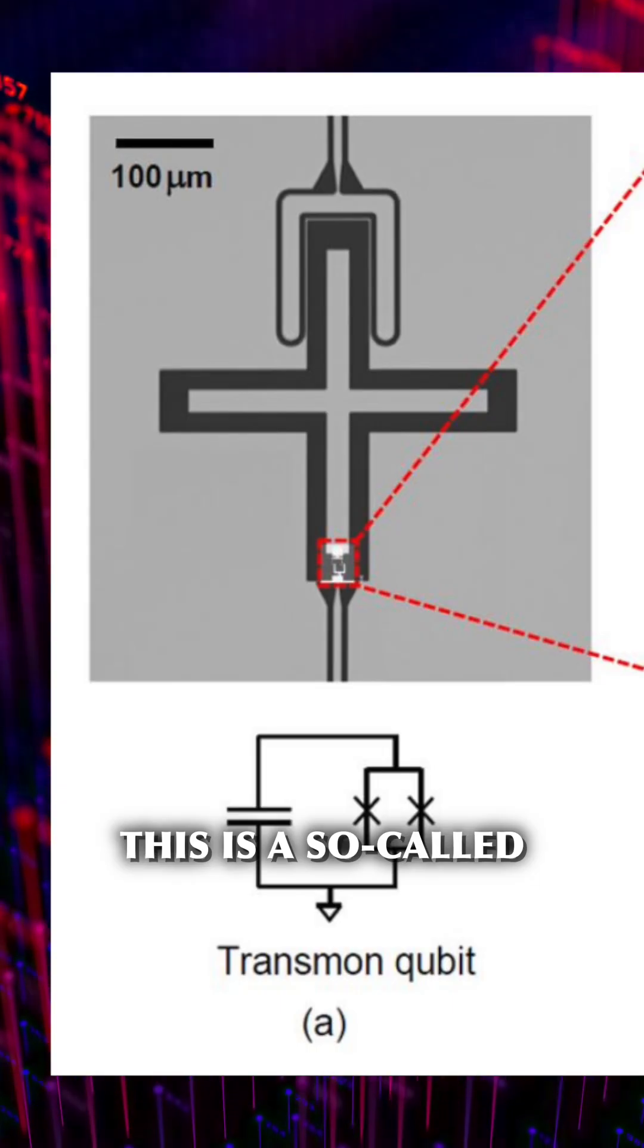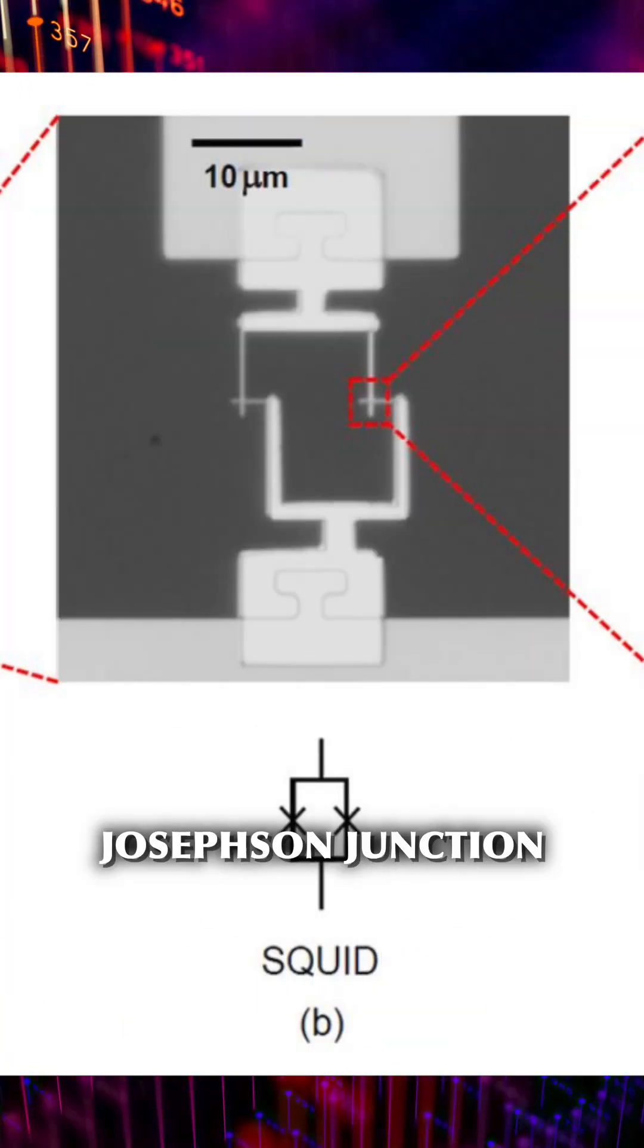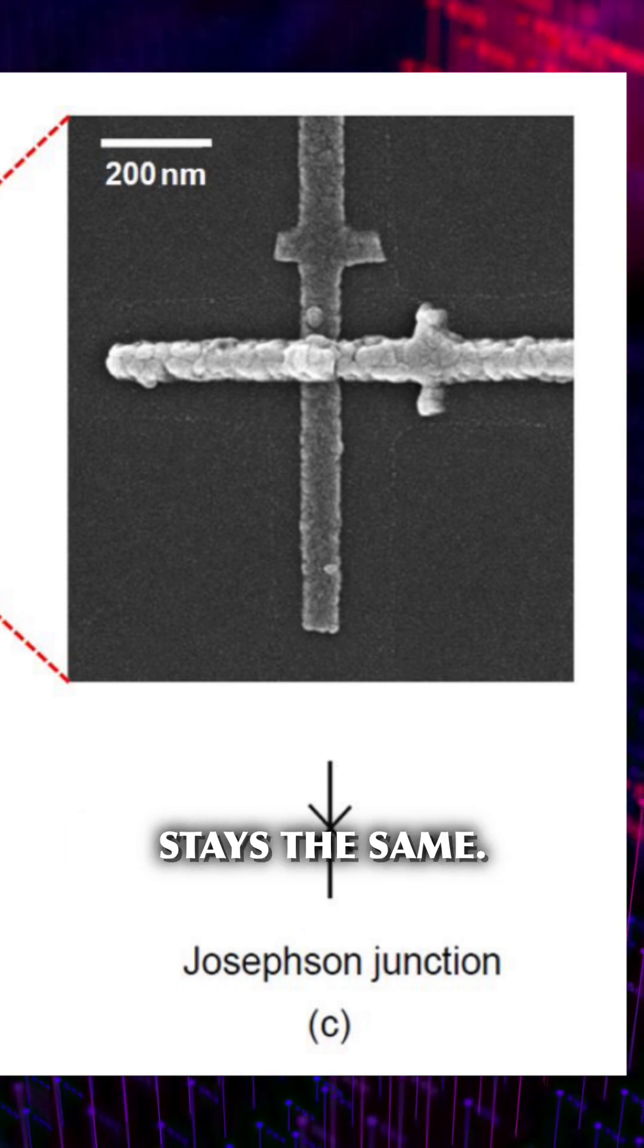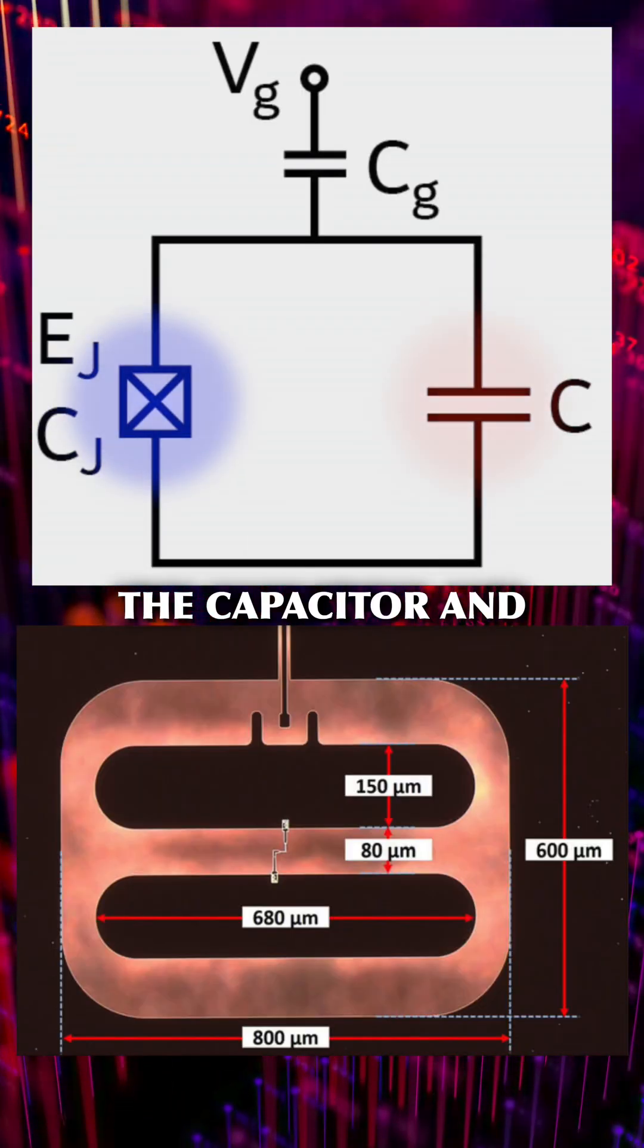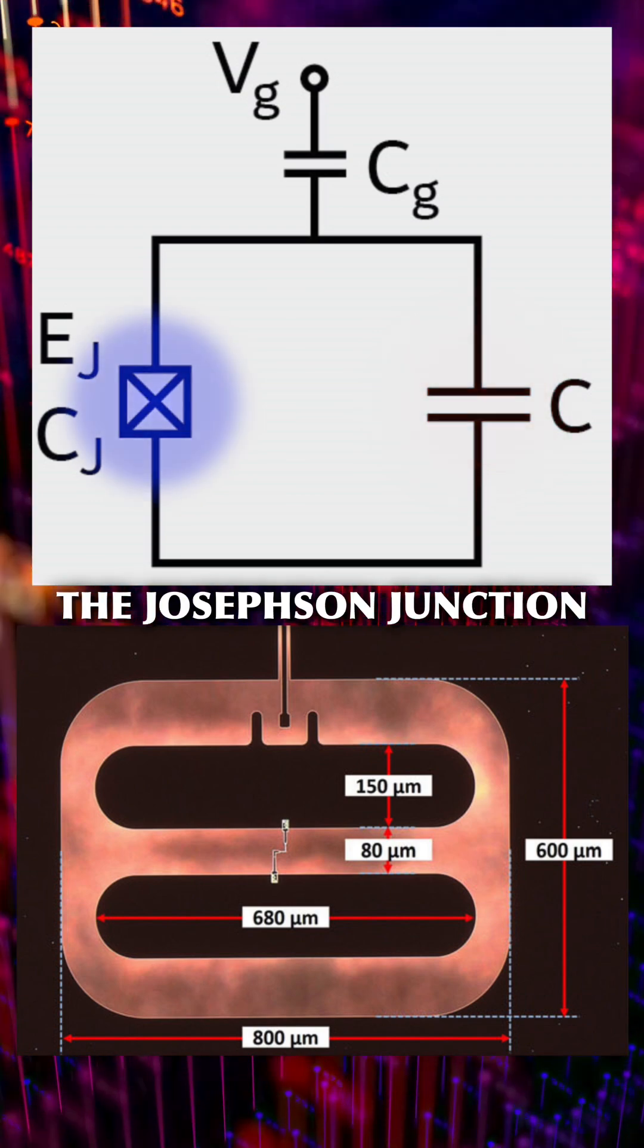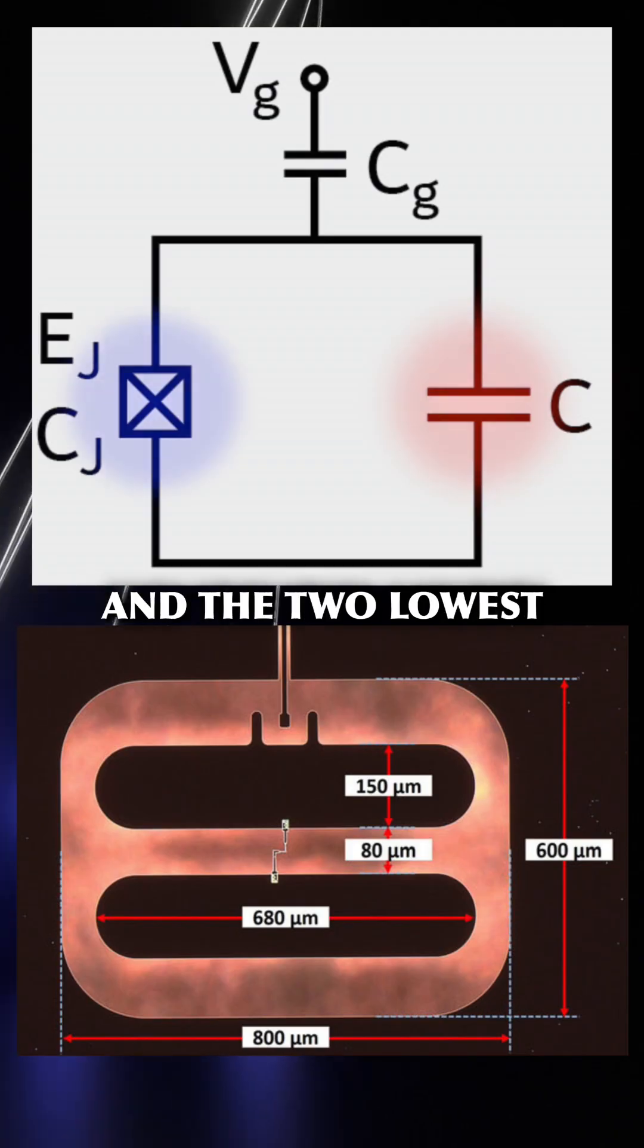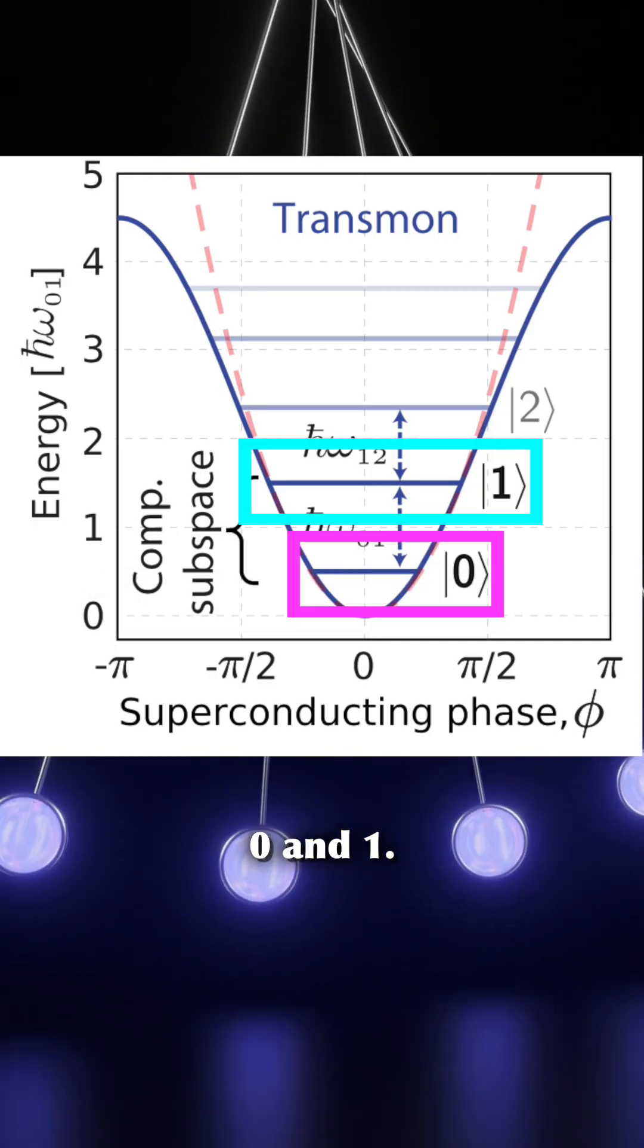This is a so-called transmon, an example of a superconducting qubit. It uses a Josephson junction instead of a coil, but the basic physics stays the same. The energy in the circuit is constantly being transferred between the capacitor and the Josephson junction inductance. This system is a quantum harmonic oscillator and the two lowest energy levels of this oscillator are the qubit states zero and one.